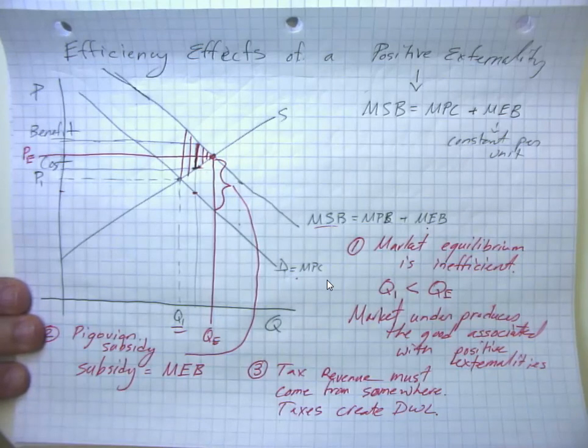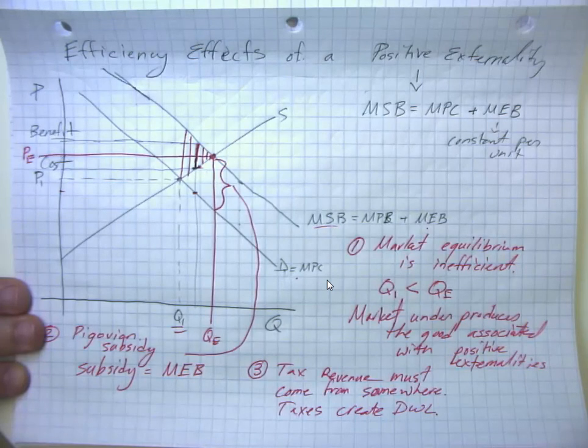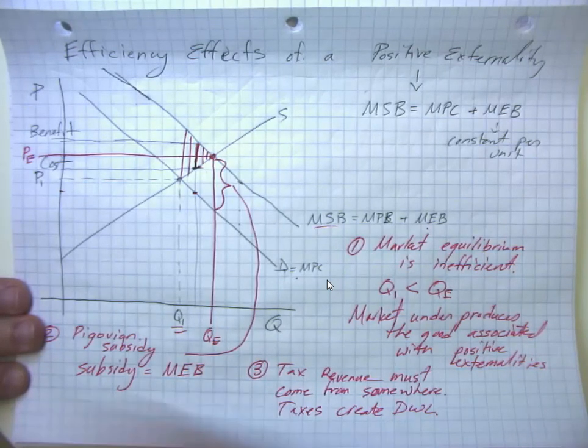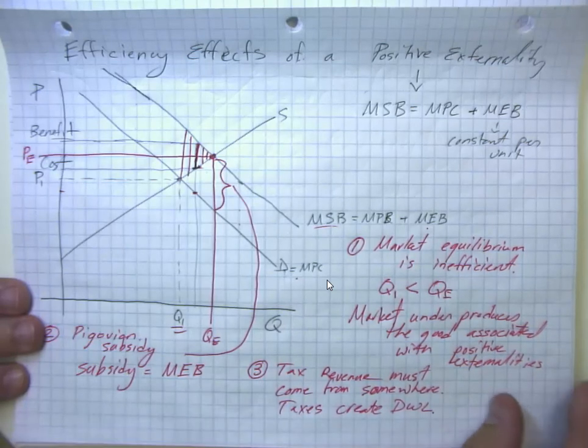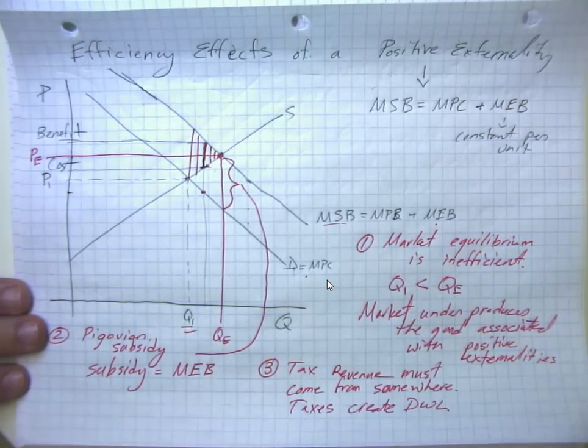This also comes back to that idea of distinguishing between the pecuniary indirect externalities that don't impair economic efficiency and the direct or technical externalities that do. In particular, you don't need to subsidize activities that have pecuniary externalities, nor do you need to tax them, to get to the efficient level because those sorts of externalities don't impair economic efficiency. That's going to be another test that you would need your externalities to pass before you would want to tax or subsidize them.